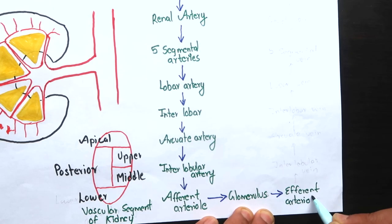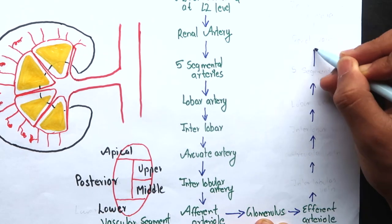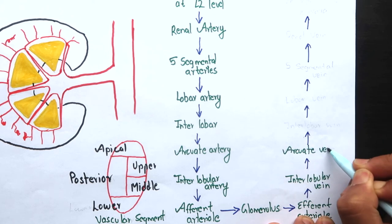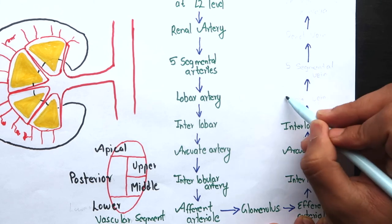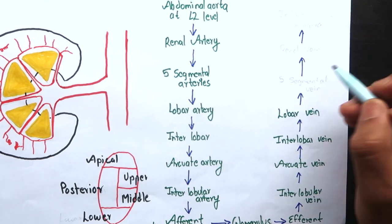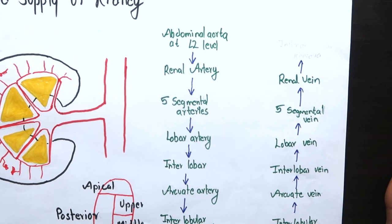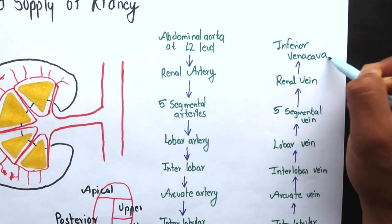From the glomerulus there arise efferent arterioles which forms interlobular veins. I'm not going to draw veins because it's going to look very congested. And also it's very easy because the veins follow the exact pathway the arteries came in. I have written them side by side to their corresponding artery. The interlobular veins drain into interlobar veins which drain into lobar veins and the lobar veins into segmental veins. Segmental veins unite to form renal vein which ultimately drains into inferior vena cava.